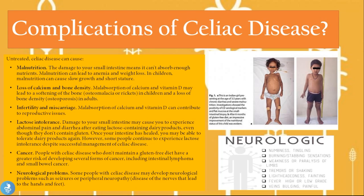Neurological problems are also a complication. Some people with celiac disease may develop neurological problems such as seizures or peripheral neuropathy. The neurological manifestations include numbness and tingling, burning and stabbing sensations, weakness or paralysis in the limbs, tremors or shaking, lightheadedness, fainting, fever, and painful bulging veins.